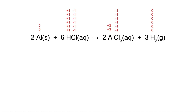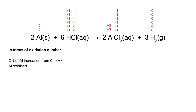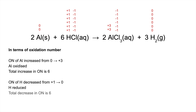We can see a change in oxidation number for the aluminium and for the hydrogen. The oxidation number of each aluminium has increased from zero to plus three, so aluminium has been oxidized. The total increase in oxidation number is six, because we've got two moles of aluminium and each one has changed by three. Moving on to the reduction process, the hydrogen oxidation number has decreased from plus one to zero, so hydrogen is being reduced.